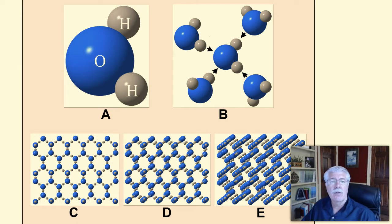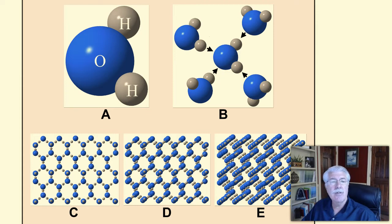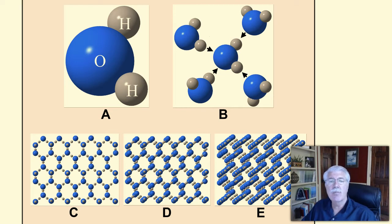Water molecules are called H2O because two hydrogen atoms attach to a single oxygen atom. In A, we see that the molecule is held together by the attraction of oxygen and hydrogen atoms to each other, because the two atoms have opposite charges. These charges also strongly attract other water molecules, like a magnet. This plays an important role in the special properties of water.